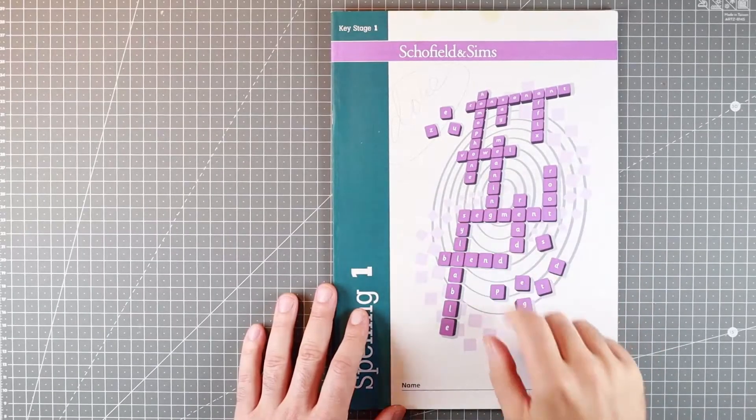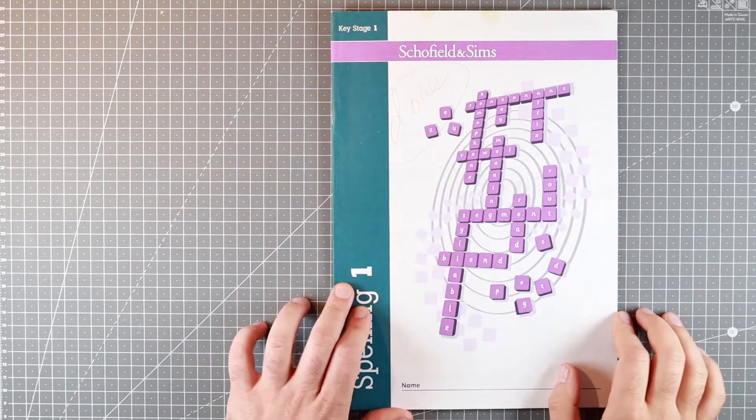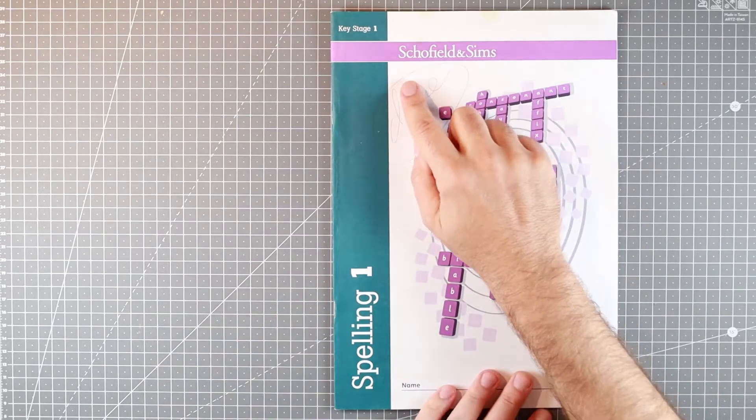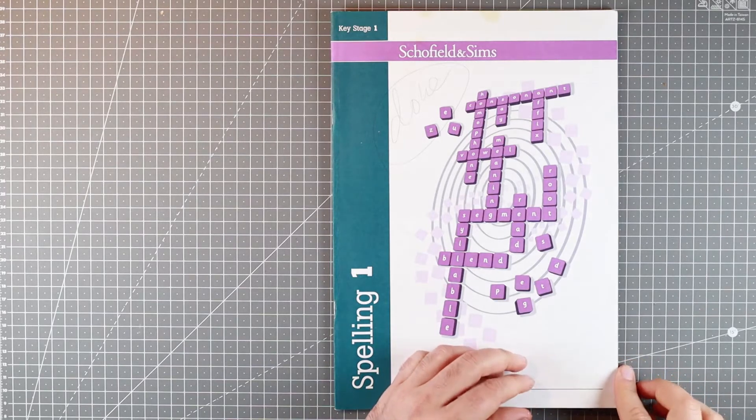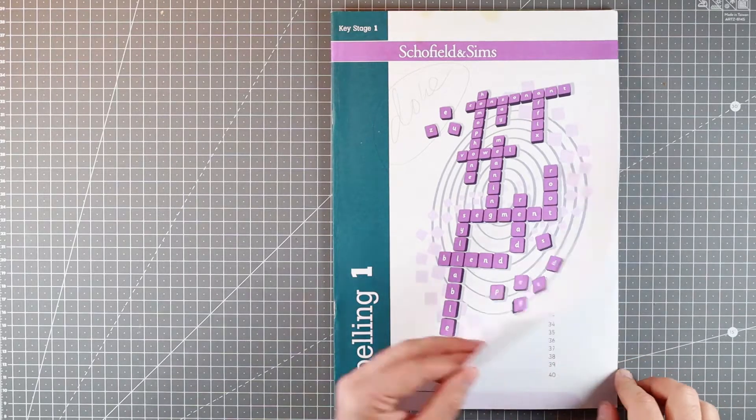What's the meaning of all of this? Welcome back to Books for Donkeys! This is Schofield and Sims, Key Stage 1, Spelling 1. Printed in four colors on some 40-odd pages.